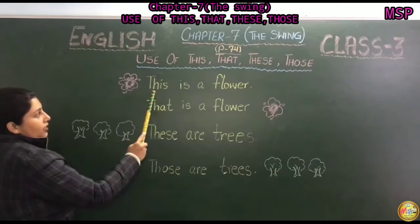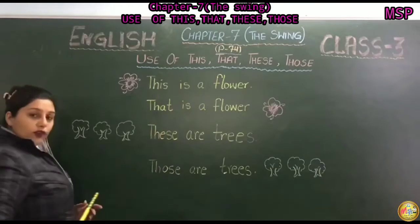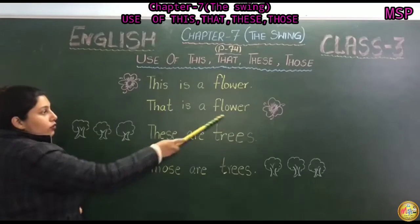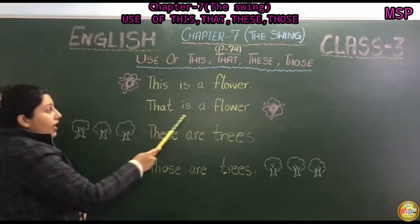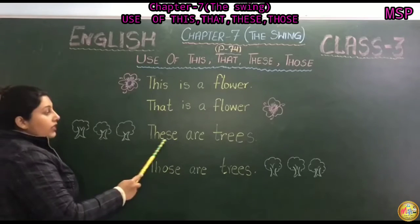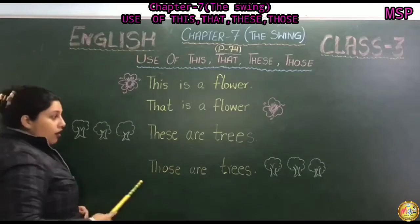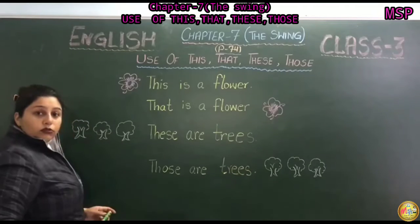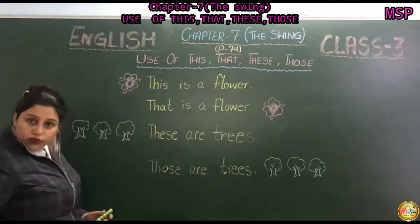Ik flower saadde neide hai, this is a flower. Ik flower saadde toh door hai, that is a flower. Bohat saare ruk saadde neide hai, these are trees. Bohat saare ruk saadde toh door haan, those are trees.